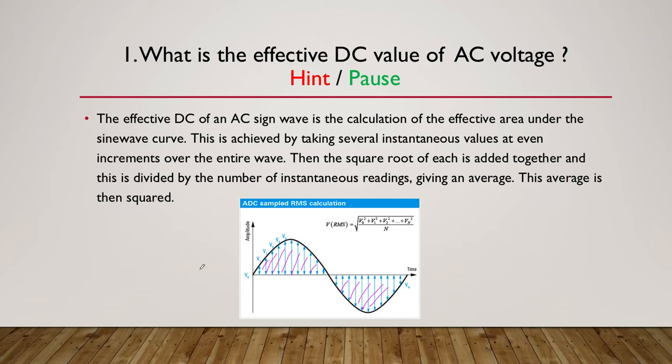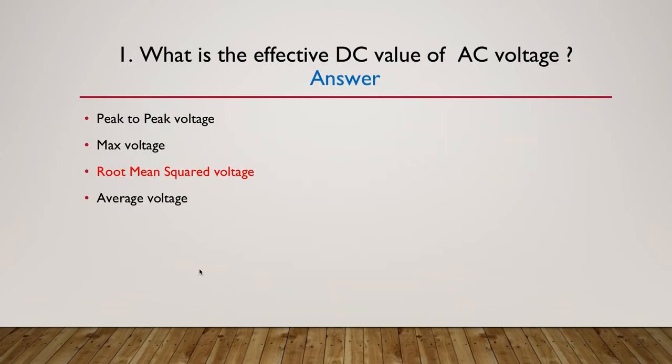So now we'll move on to the answer. So what is the effective DC value of an AC voltage? The answer is the root mean squared voltage. So as its name implies, it's the square root of the average squared back again, so root mean squared, or we just abbreviate it to RMS.